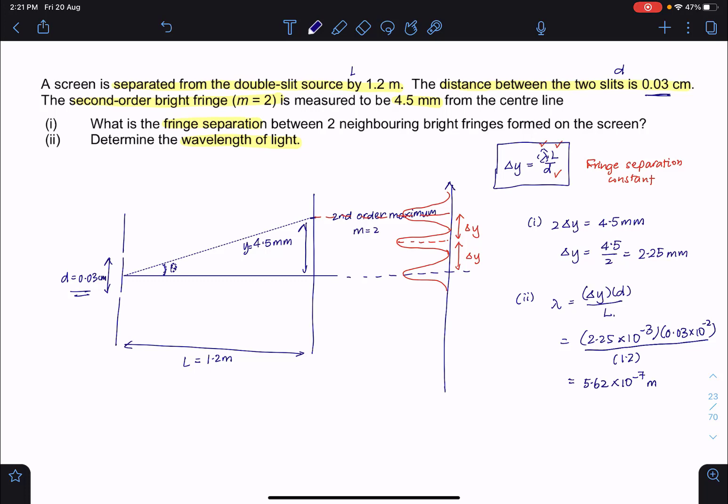Alright, doing a quick check, we know that visible light is from 400 nanometers to 700 nanometers. So this is a reasonable value because this is 562 nanometers. Okay, so that's it.